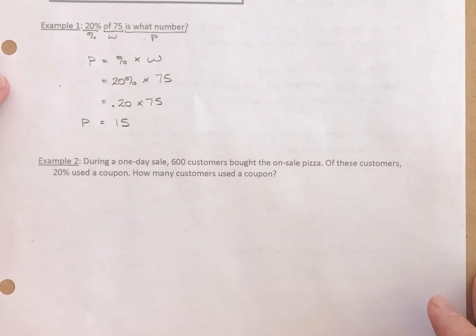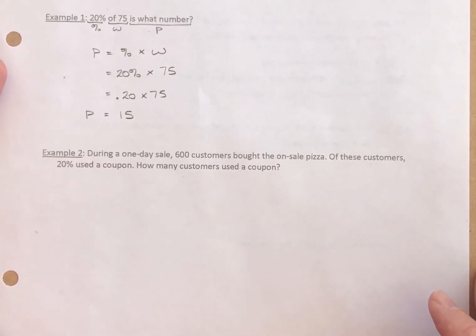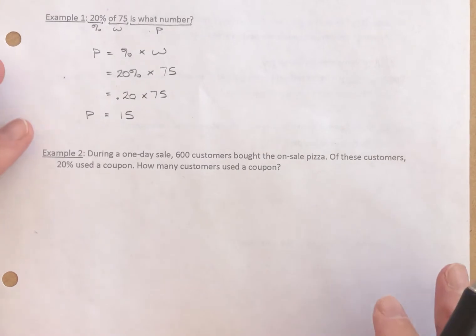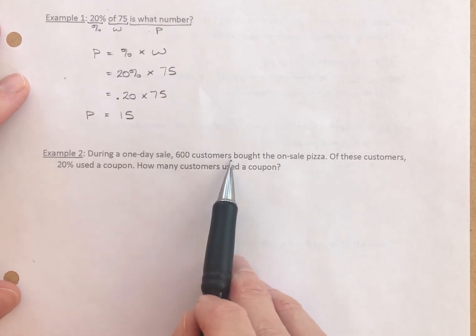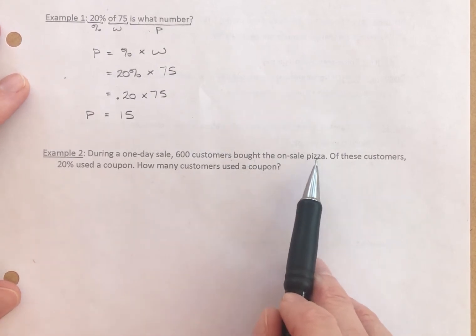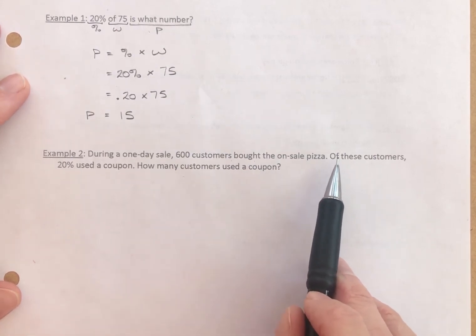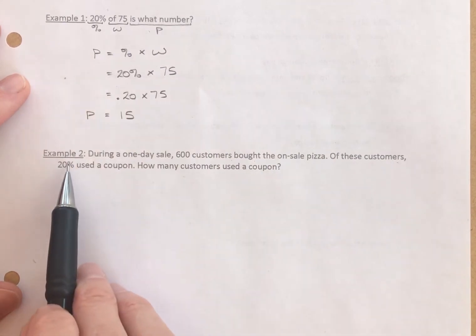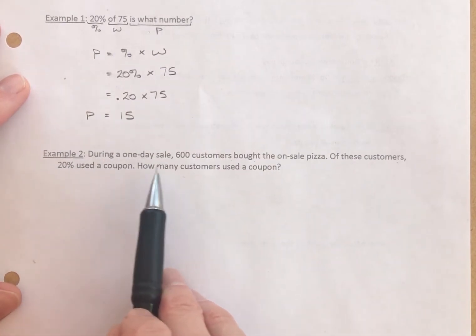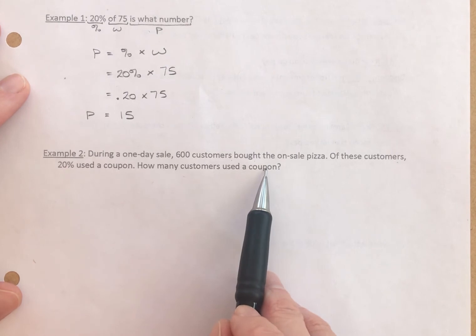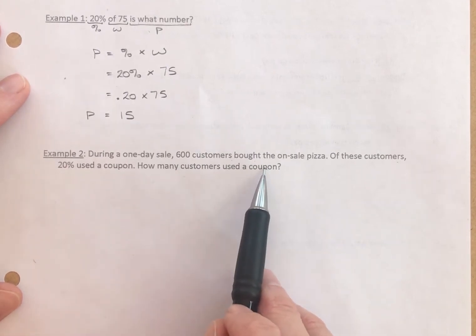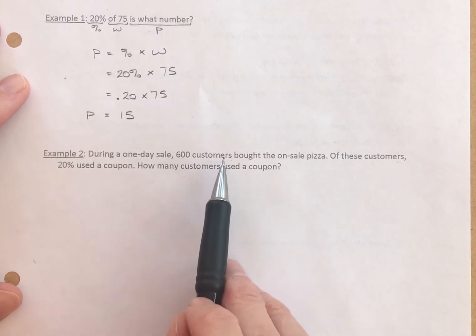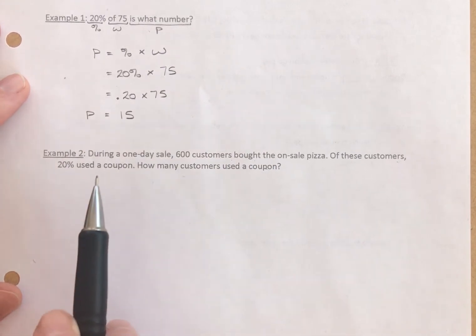Let's take a look at an actual example, a real-world example here. During a one-day sale, 600 customers bought the on-sale pizza. Of these customers, 20% used a coupon. How many customers used a coupon? Well, the number of customers that used a coupon is a part of the number of customers who bought the on-sale pizza.